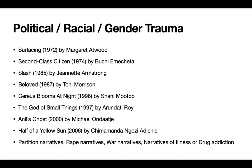A trauma narrative of another kind is Second Class Citizen by Buchi Emecheta. Here, Emecheta creates the semi-autobiographical character Ada, who travels with her children to London and undergoes several experiences of trauma: gender discrimination in her Nigerian society, as well as racial and gender oppression in London, and trauma based on poverty. This is an example of migrant communities and their trauma — diasporic writers have written about it.